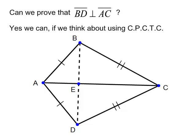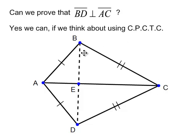CPCTC has a fair amount of power. If you are capable of saying that two triangles are congruent, and from there use CPCTC to say their corresponding parts are congruent, then you can go on to prove other things. We're going to try to prove that BD is perpendicular to AC.